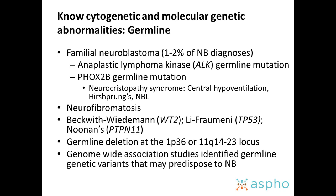Two genetic abnormalities account for nearly all familial neuroblastomas. The first is germline aberrations in the anaplastic lymphoma kinase (ALK) gene — these children have neuroblastoma with no other known genetic abnormalities. The PHOX2B germline mutation is different in that it occurs in children with neurocristopathy syndrome, so these children have central hypoventilation, Hirschsprung's, and neuroblastoma, or any two of these together. Other germline mutations are noted in your handout.